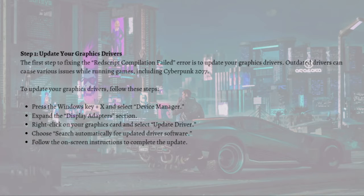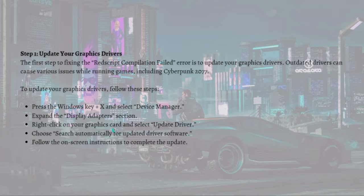To update your graphics drivers, follow these steps: press the Windows key plus X and select Device Manager. Expand the Display Adapters section, then right-click on your graphics card and select Update Driver. Choose 'Search automatically for updated driver software' and follow the on-screen instructions to complete the update.